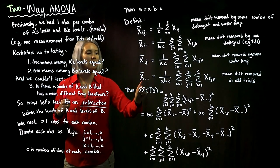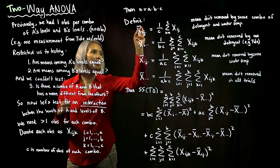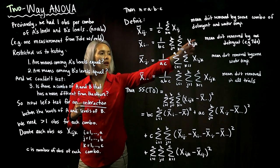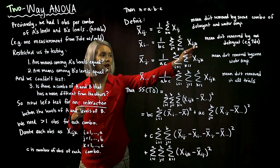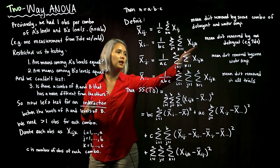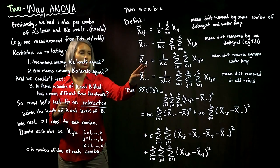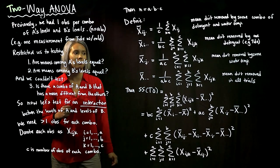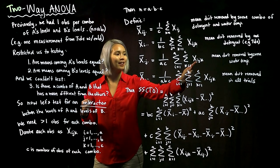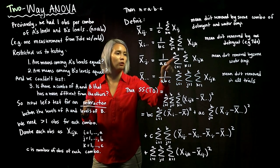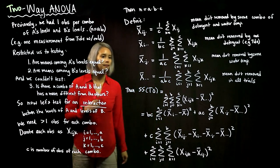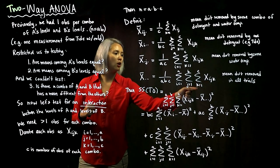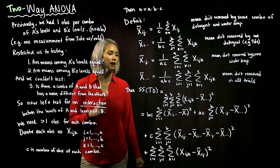X̄_·j· means we're averaging to find the mean amount of dirt removed by whatever water temperature J represents. The overall grand mean is X̄_···. To find the mean for the i-th level of A, we add up all the different water temperatures and all the different trials, summing over j and k, then divide by B times C. Similarly, X̄_·j· sums over i and k and divides by A times C. For the grand mean, we add everything up across all three indices and divide by the overall sample size A times B times C.